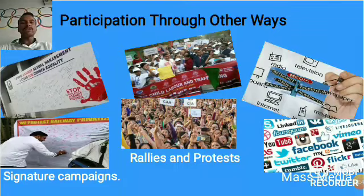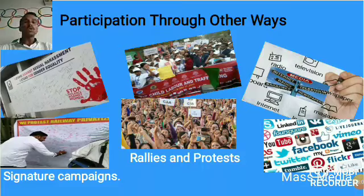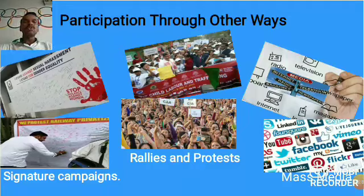For example, consider the protest against railway privatization. Nowadays, as you know, the Modi government is doing the privatization of the railway, which is the most important public sector organization — a PSU, or public sector company. But the government wants to privatize it, so the employees start to protest or run signature campaigns against that decision.